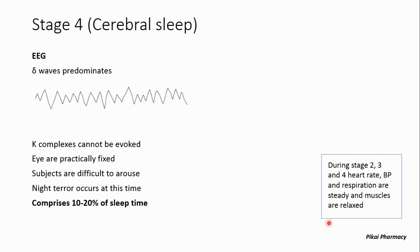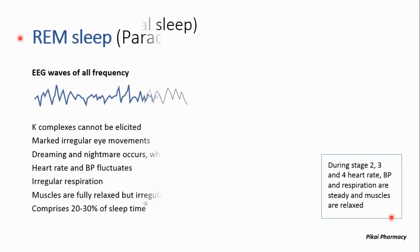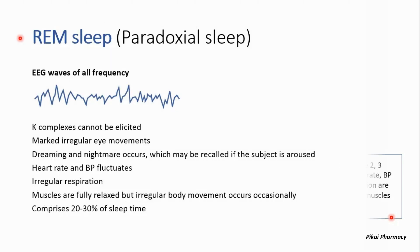As a quick note, during stages 2, 3, and 4, the heart rate, blood pressure, and respiration all remain steady, and the muscles remain in a relaxed state.